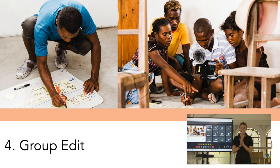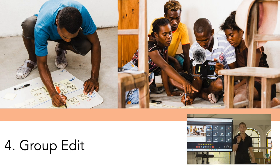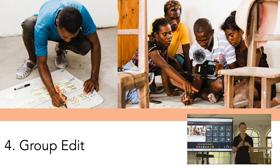After all the filming came the group edit. The group came back together with paper and post-it notes and created a storyboard of what they wanted their film to look like. The top row showed the interviews; the bottom row showed what b-roll to place alongside them. Some groups also specified which parts of the interviews they wanted to include and in what order — we had varying levels of detail across the different groups.